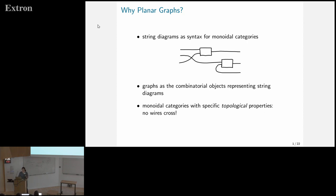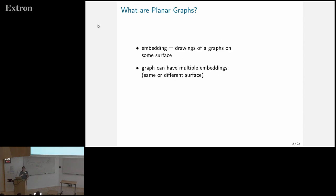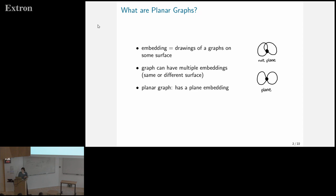A little bit of terminology on planarity. What are planar graphs? What we're describing are graph embeddings, which are drawings of graphs on a specific surface — in this case, the plane for planar graphs. One graph can have multiple embeddings, even on the same surface, but obviously also embeddings on different surfaces. This is actually the same graph but two different embeddings: one of them is planar and the other one is not. A planar graph is one that has a planar embedding, though the terms get used interchangeably.